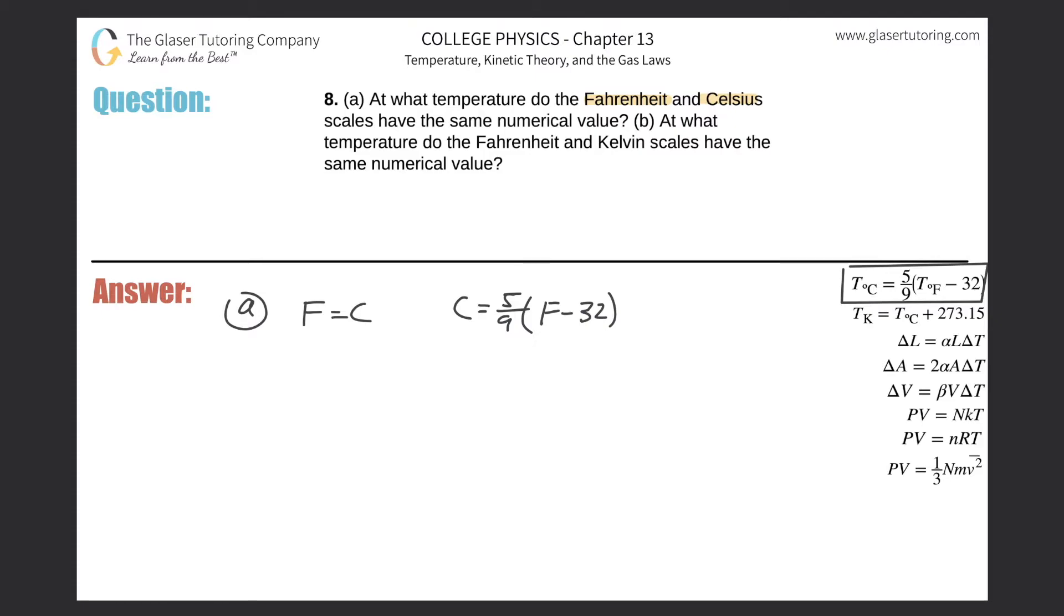So I can just do a simple substitution now. I can plug C in for F because of this relationship that F is equal to C. So let's do that. So we now have C is equal to five ninths multiplied by C minus 32 and now just solve this for C.